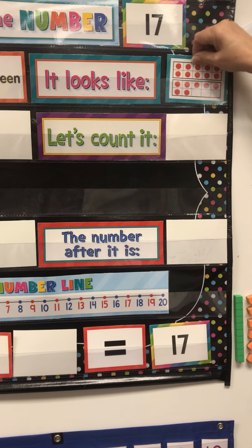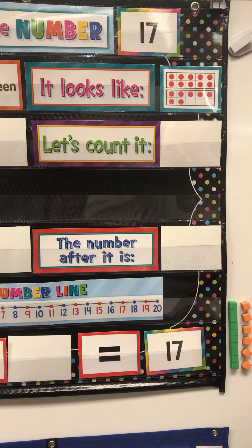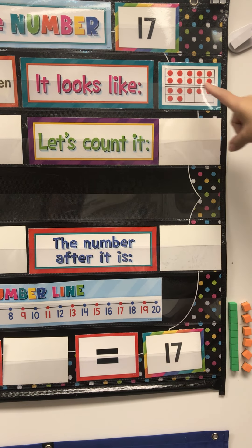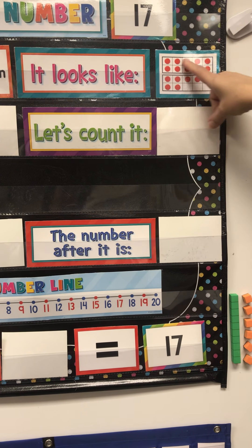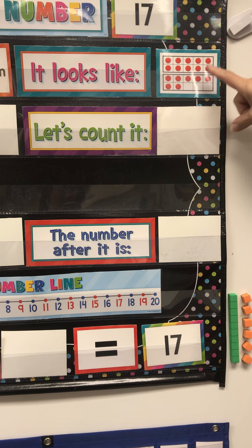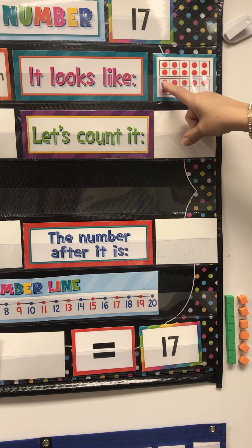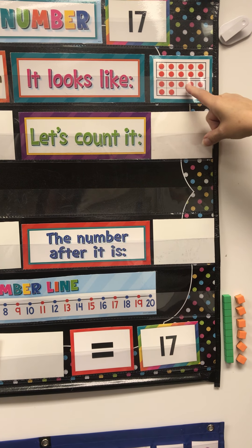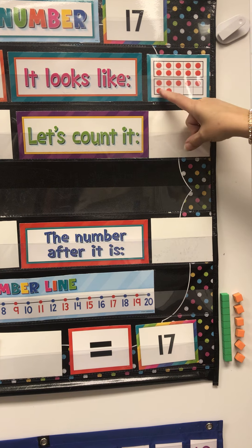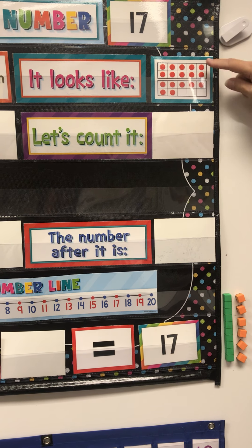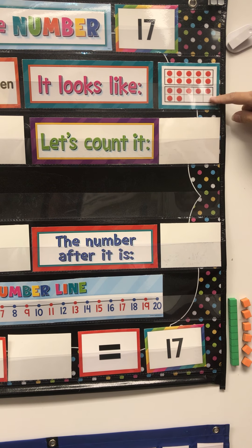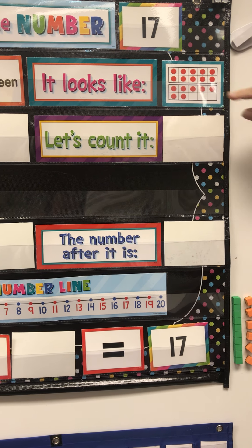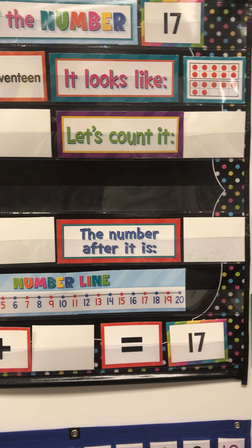When we have 17 in our ten frame, we have 10 and one, two, three, four, five, six, seven. Ten and seven make 17.